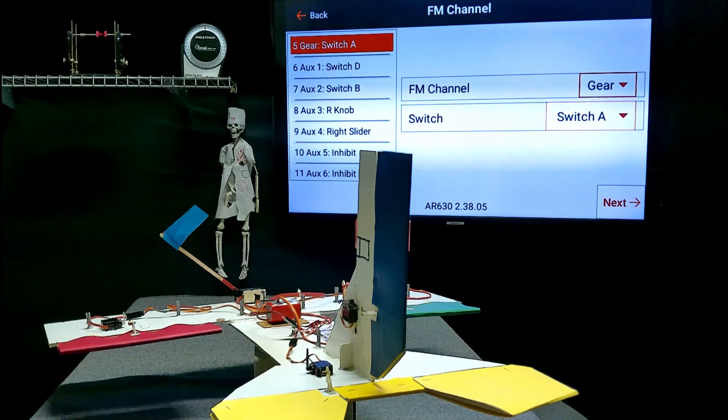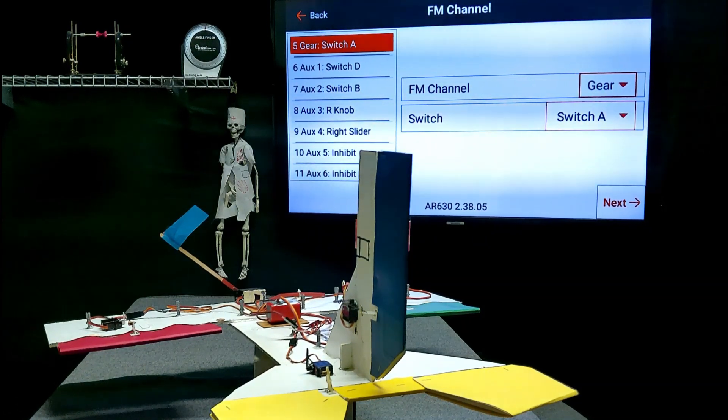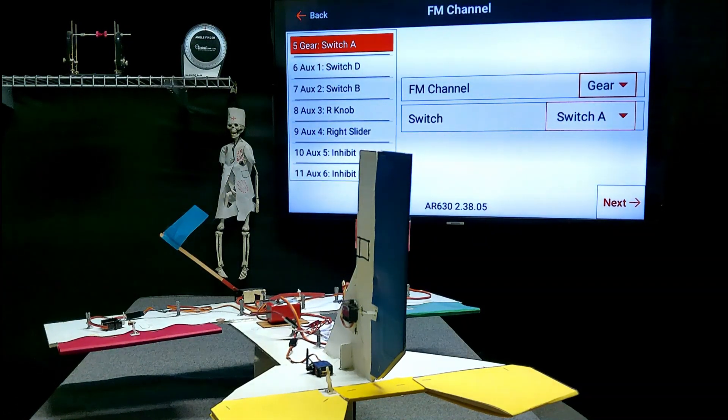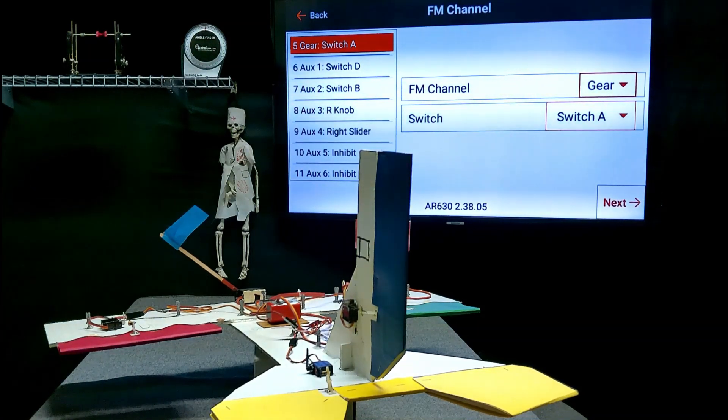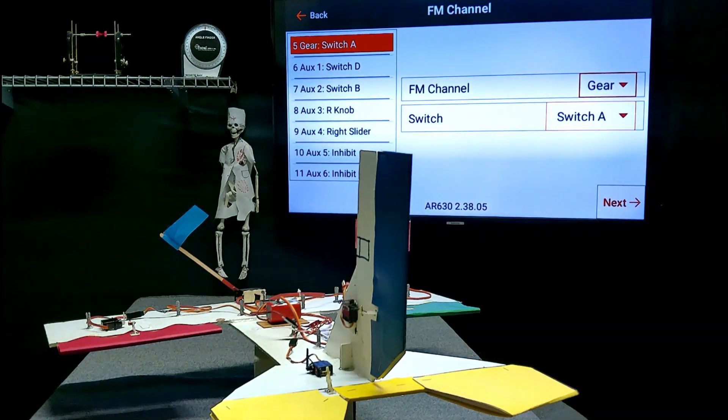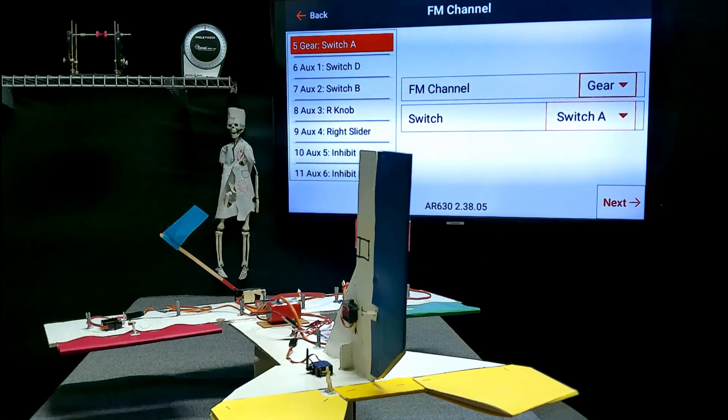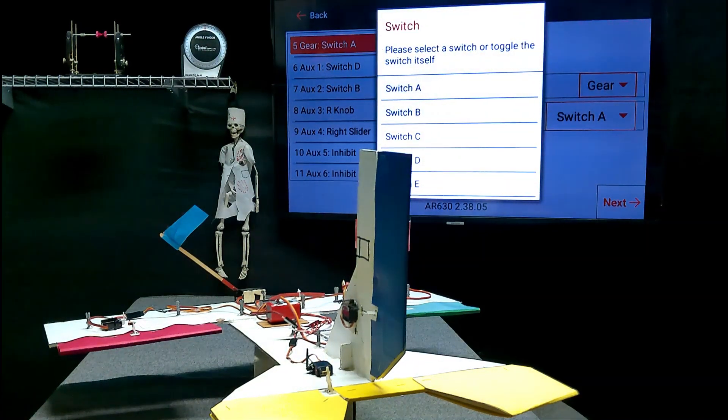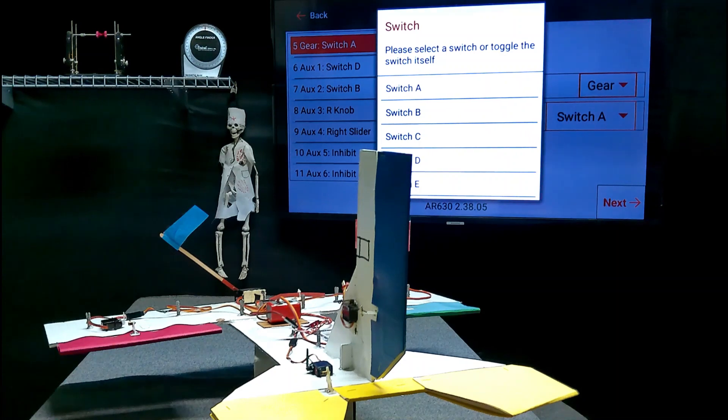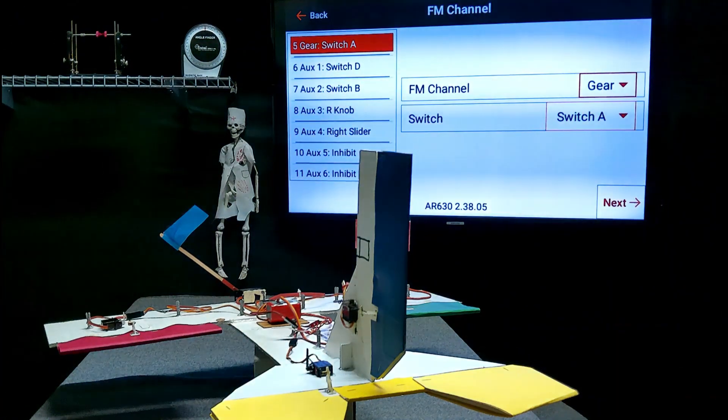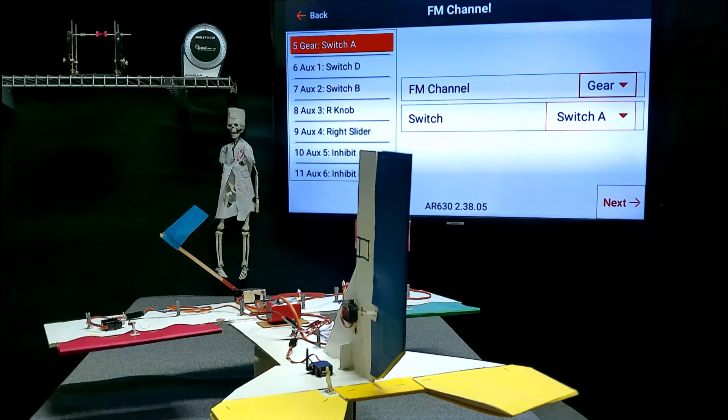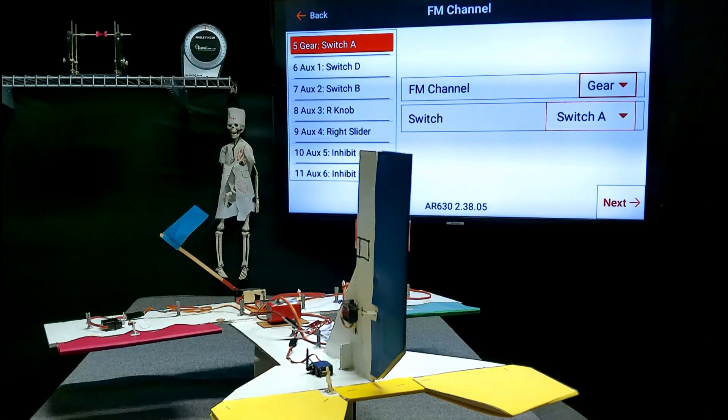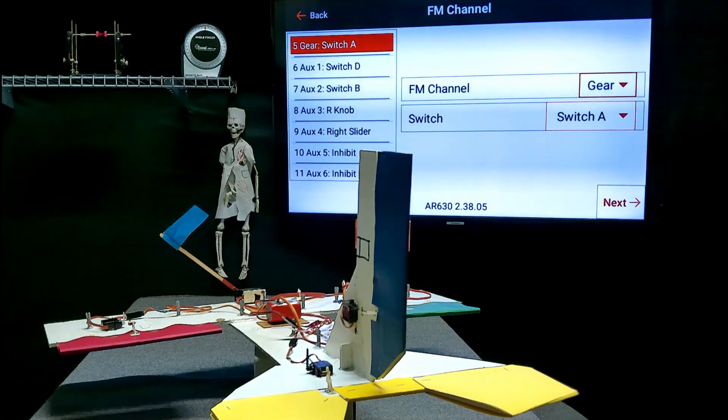Now, what switch are we going to use to operate the gear channel? With most of these transmitters, you can just tap on it and then move the switch that you want to use. I just flipped my A switch that is most always set up for gear, but it's now on the gear and next.